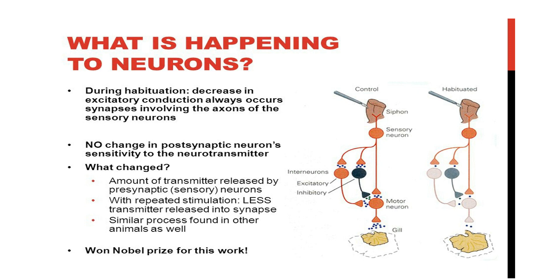So in habituation, there is no change in postsynaptic neuron sensitivity to the neurotransmitter. And how does this happen? It's about the number of neurotransmitters that's in regular one and that's in the habituated nerve. You see, like less neurotransmitters, fewer neurotransmitters are released into the synaptic cleft. This means fewer stimulation of the postsynaptic neuron.